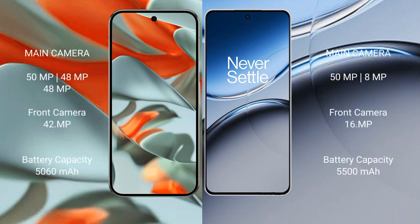Google Pixel 9 Pro XL features a triple rear camera setup: 50MP wide, 48MP ultrawide, and 48MP telephoto. The front camera is 42MP.